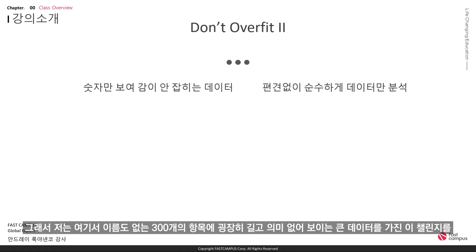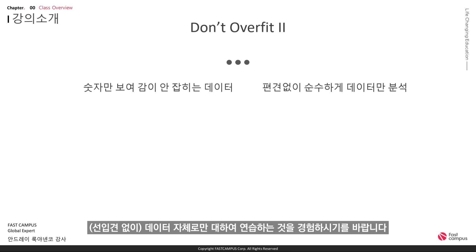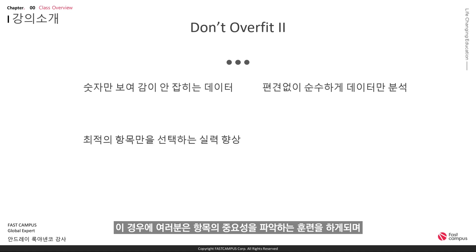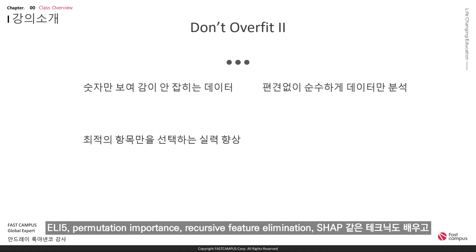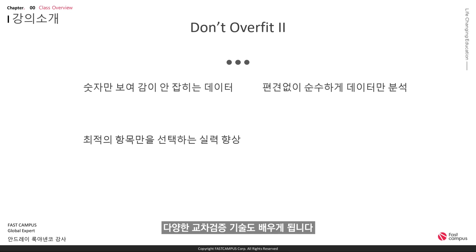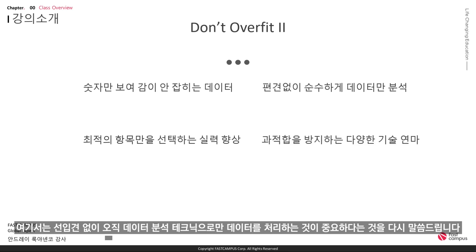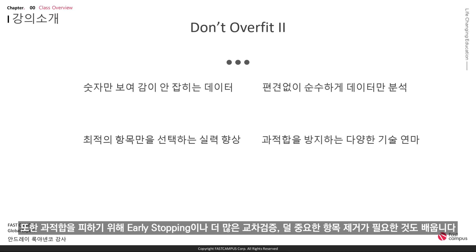Real-world is not friendly. So I want you to practice with data with 300 columns, with no labels, and very long rows of data which seem to be meaningless numbers. In these cases, you need to figure out the importance of features. I have prepared a few techniques like L1-L5, permutation importance, recursive feature elimination, SHAP, and some extra cross-validation techniques as well. It is very important for you to look at the data without any prejudices and go with analysis techniques only. You also learn that early stopping, more cross-validation, and dropping unimportant features are essential to avoiding overfitting.